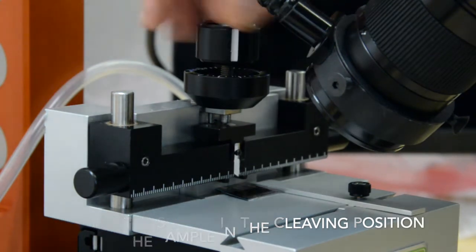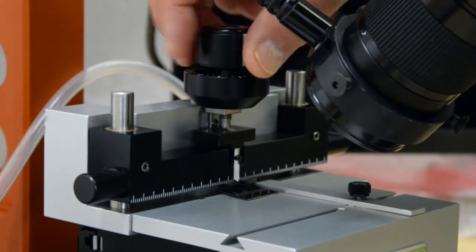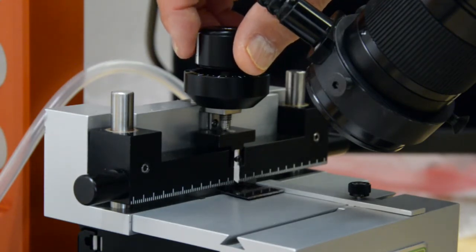Now put the sample in the cleaving position and do the same test. Make sure that the breaker bar goes smoothly and lands on the sample slowly.